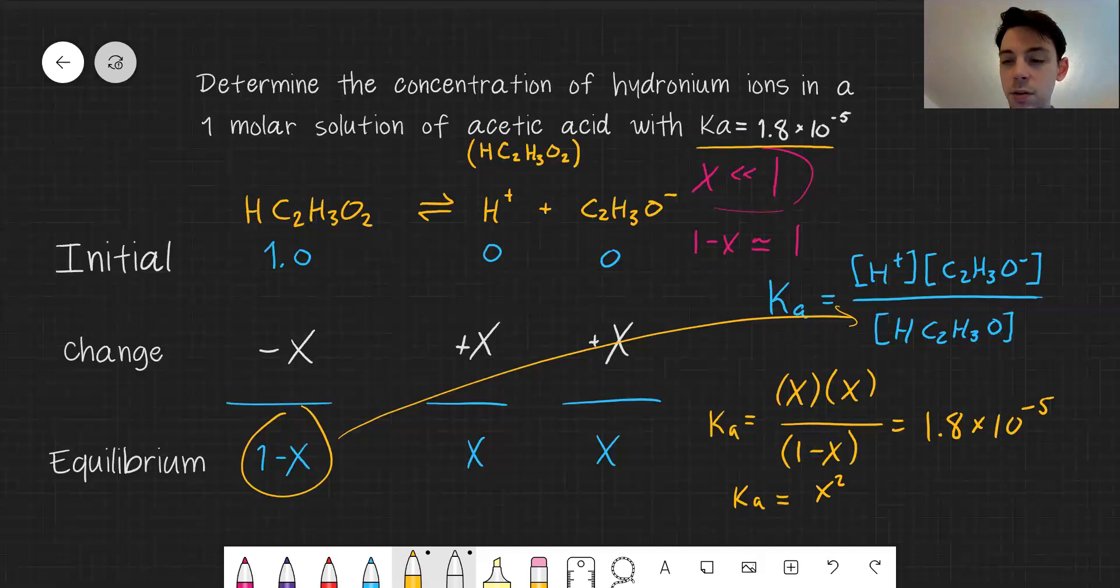8 times 10 to the minus 5. We can simply take the square root of both sides to solve for X.